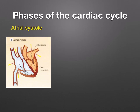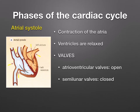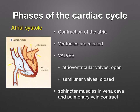Let's start with atrial systole — this is contraction of the atria. The cardiac muscle of the atria contracts, forcing the blood that they contain into the ventricles. The blood has only been pushed a short distance, so the atria are very thin. During this stage, the cardiac muscle of the ventricular walls remains relaxed. The atrioventricular valves are open and the semilunar valves are closed. Also note that the sphincter muscles in the vena cava and pulmonary vein contract to prevent backflow.